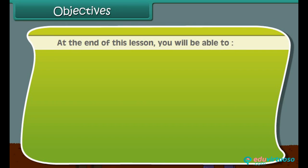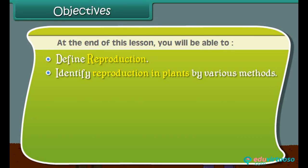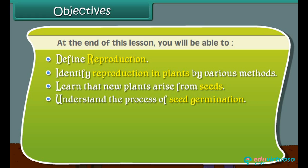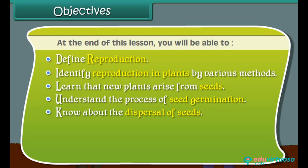At the end of this lesson, you will be able to: define reproduction; identify reproduction in plants by various methods; learn that new plants arise from seeds; understand the process of seed germination; know about the dispersal of seeds; and understand the explosion of fruits.